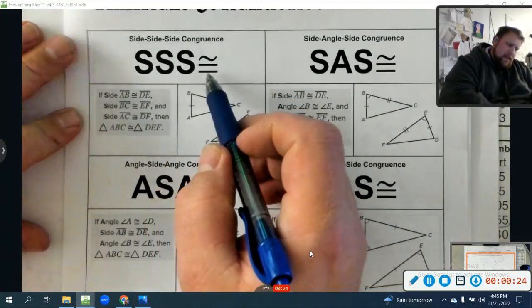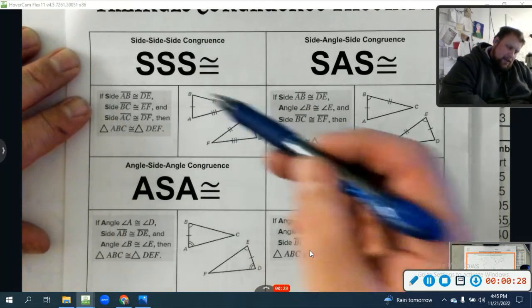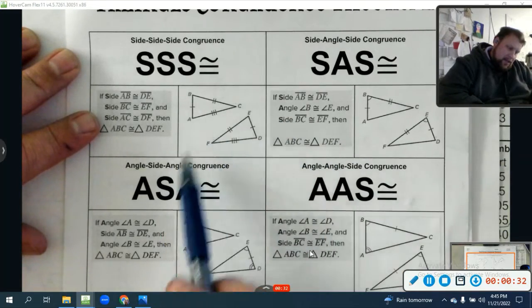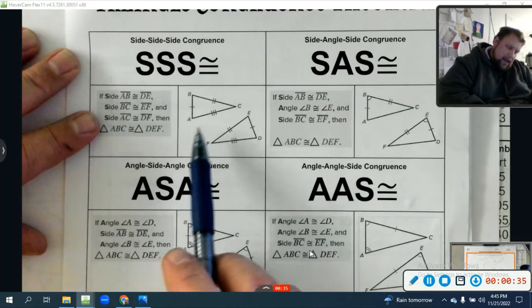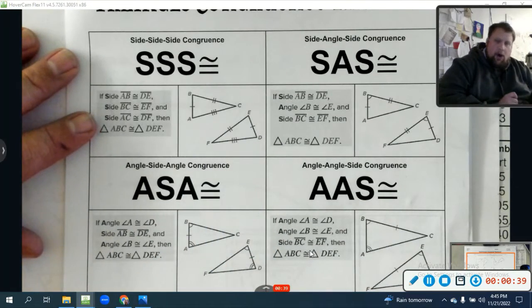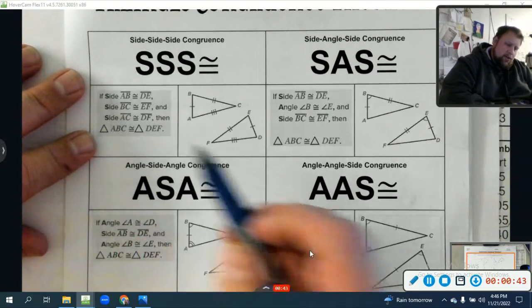So the first congruency is side, side, side, which just says if side AB is congruent to DE, and side BC is congruent to side EF, and side AC is congruent to side DF, so all three sides of the triangles are congruent to each other, we can say triangle ABC is congruent to DEF.